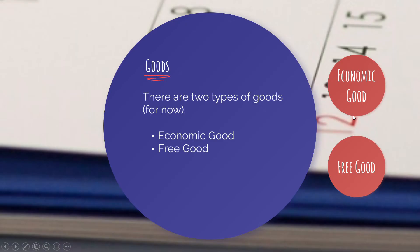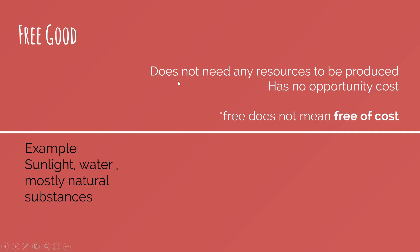The second type is free goods. Free goods do not need any resources to be produced and have no opportunity cost. Note that 'free' does not mean free of cost. Examples are sunlight and water — they are mostly natural substances. They have no opportunity cost; we can have both sunlight and water together because they cannot be excluded or require a choice.